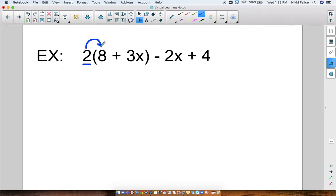So first I will distribute 2 times 8 which is 16, and then I will distribute 2 times 3x which is 6x. Do I distribute the 2 to these? No, I do not because minus 2x plus 4 is not inside the parentheses. So I just rewrite them on my next line. I leave them by themselves without multiplying by 2.